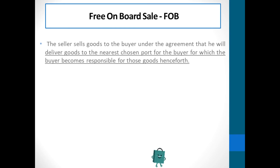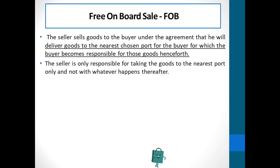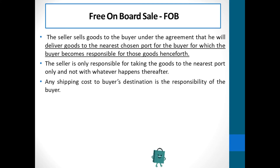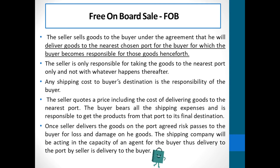Free On Board — FOB sales. The seller sells goods to the buyer under the agreement that he will deliver goods to the nearest chosen port for the buyer, for which the buyer becomes responsible for those goods henceforth. The seller is only responsible for taking the goods to the nearest port and not with whatever happens thereafter. Any shipping cost to the buyer's destination is the responsibility of the buyer. The seller's price includes the cost of delivering goods to the nearest port. The buyer bears all shipping expenses and is responsible for getting the product from that port to its final destination. Once the seller delivers the goods on board at the port, risk passes to the buyer for loss and damage. The shipping company acts in the capacity of an agent for the buyer — thus, delivery to the port by the seller is delivery to the buyer.